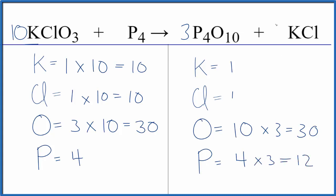Why don't we put a 10 in front of the potassium chloride. 1 times 10 that gives us 10. Chlorine 1 times 10. That gives us 10 and we're almost done.